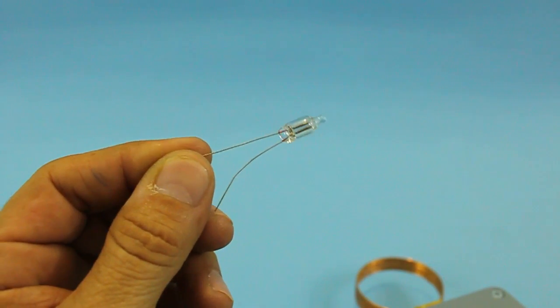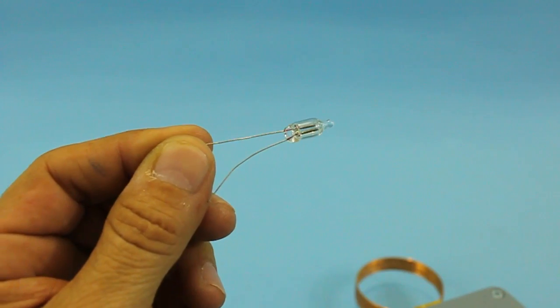This small neon lamp needs about 80 volts to turn on.